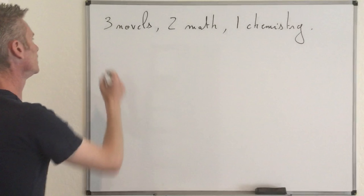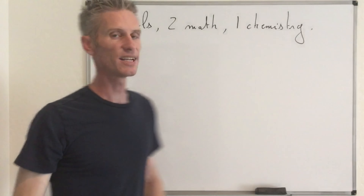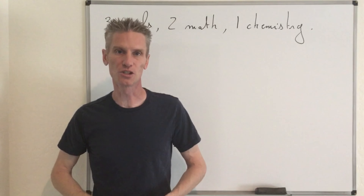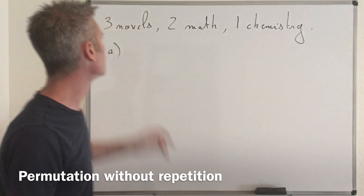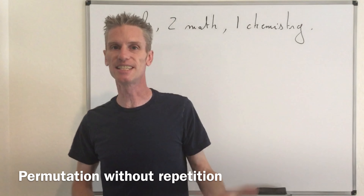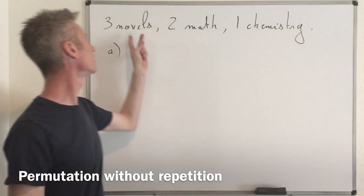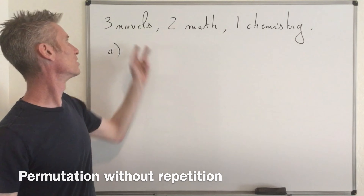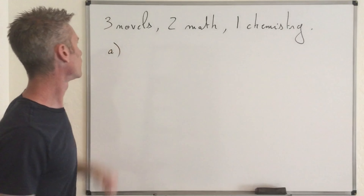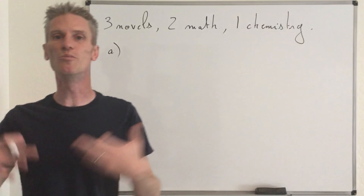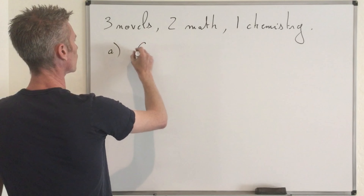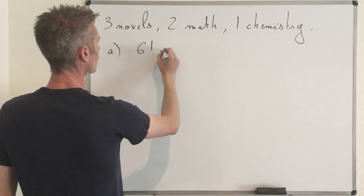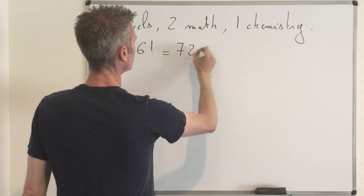So in the first question, the goal is to find the number of ways you can order those books on a bookshelf. That's basically an example of permutation. We are going to assume that those six books are all different — no repetition of the same novel or the same math book. So for the first question, the total number of possible permutations is just equal to six factorial, which equals 720.